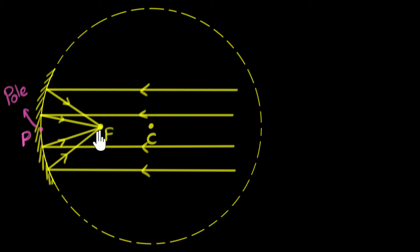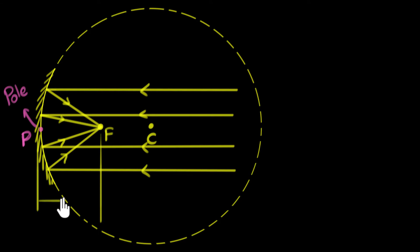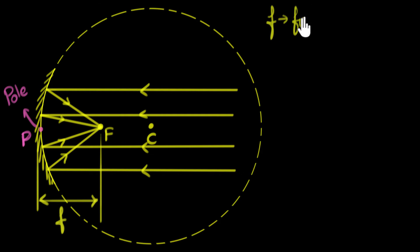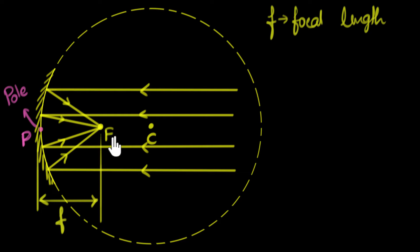The distance from the pole to the focus is also given a name — it's called the focal length, and it's represented by small f. So small f represents focal length. It's basically a number that tells us how far the rays of light are being focused from the center of the mirror.